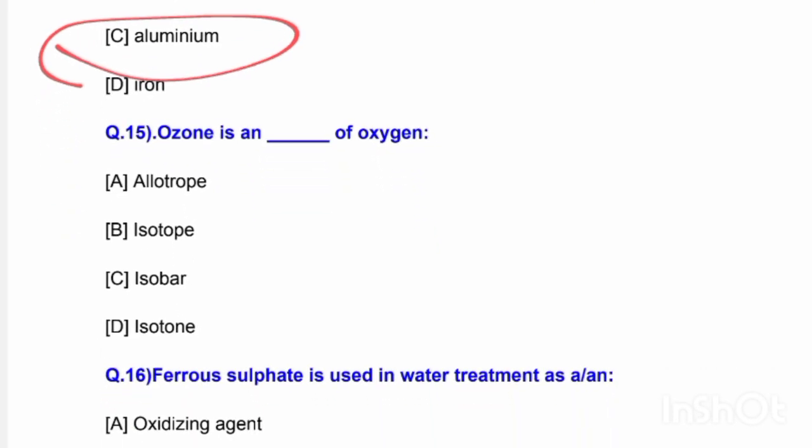Next question: Ozone is a blank of oxygen. Options are allotrope, isotope, isobar, and isotone. The correct answer is option A — ozone is an allotrope of oxygen.